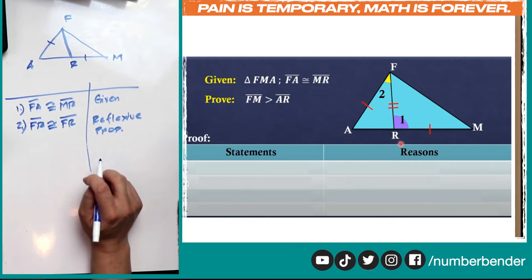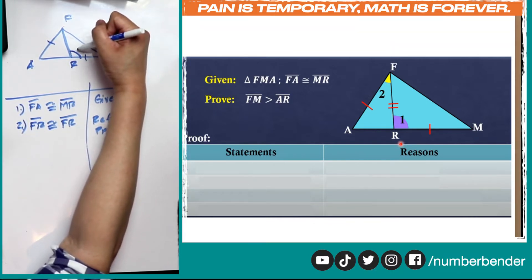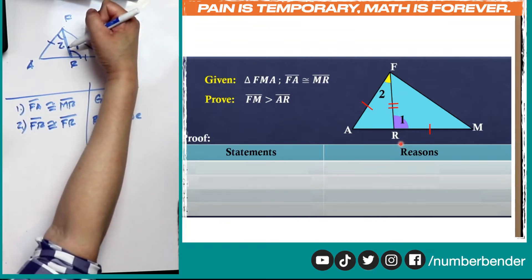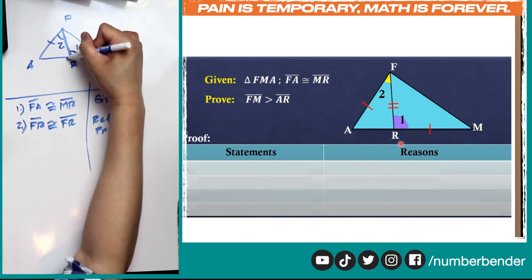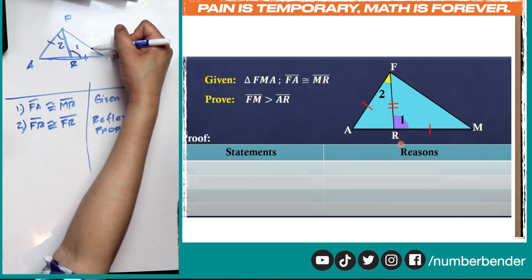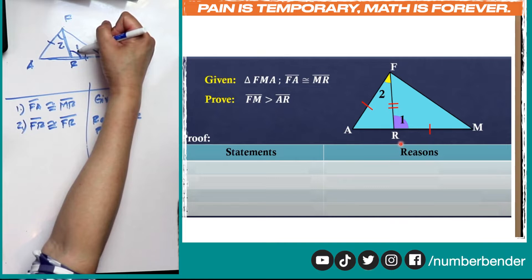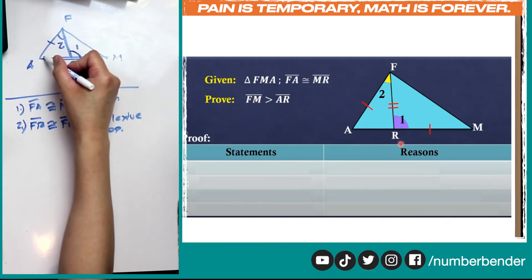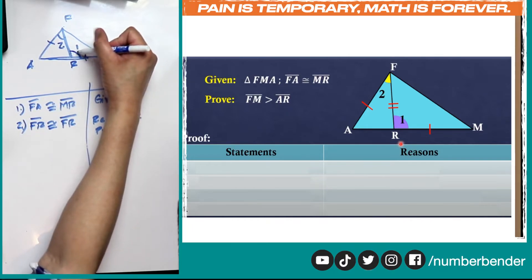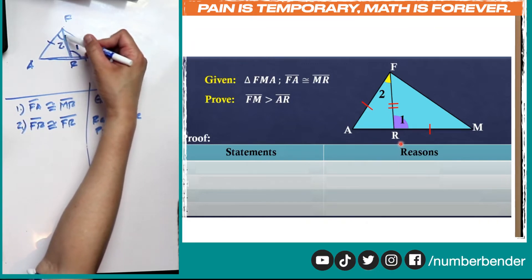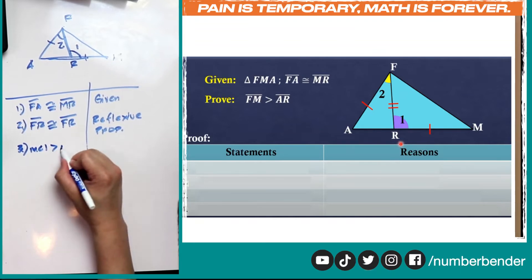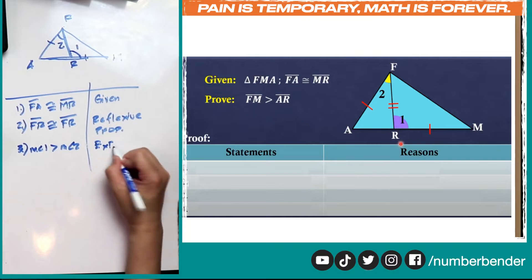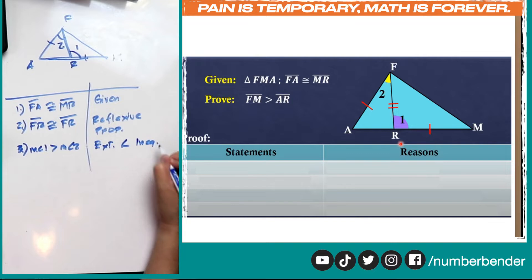With this we can now show that the measurement of angle 1 is greater than the measurement of angle 2. This is angle 1 and this is angle 2. We're able to show that because of the exterior angle inequality theorem — if we extend this leg, we know from the exterior angle theorem that angle 1 equals the sum of angle 2 and angle A, so angle 1 will always be bigger than the interior angles in triangle FAR. Therefore, the measurement of angle 1 is greater than the measurement of angle 2 because of the exterior angle inequality theorem.